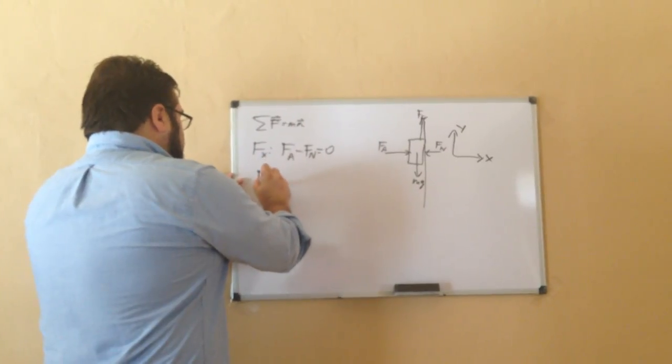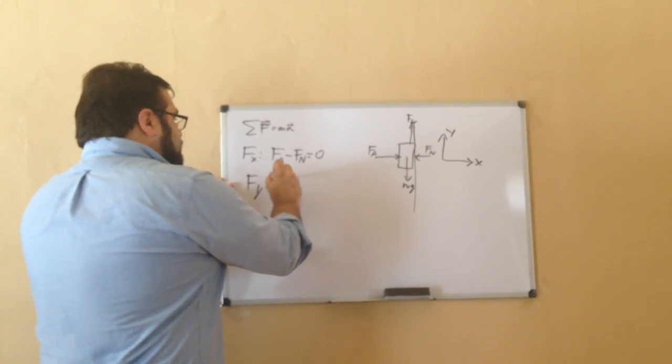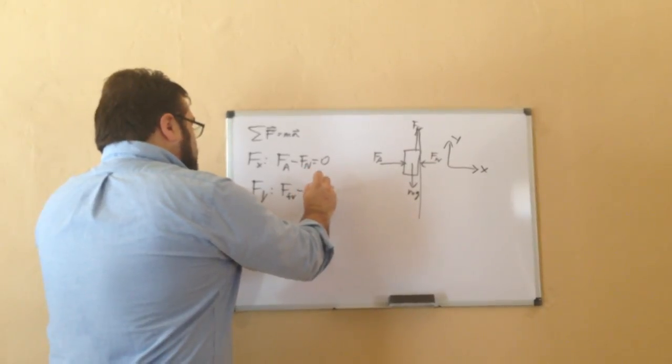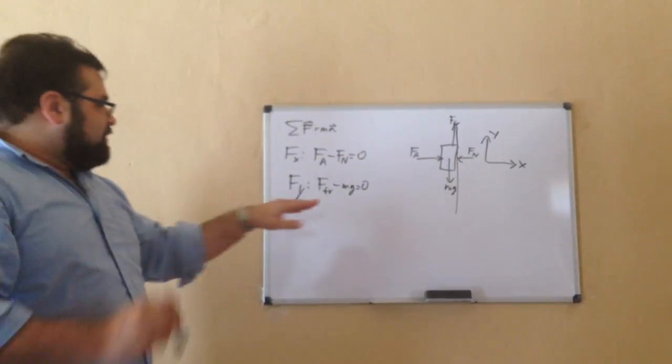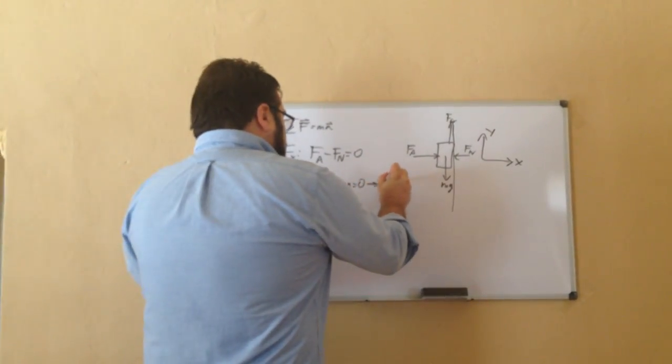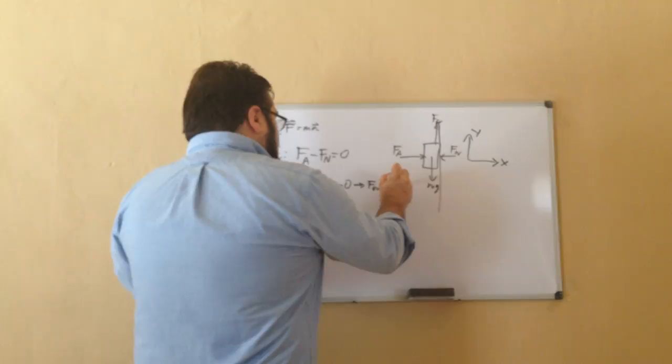In the y direction, you've got the friction force up and gravity down, and they balance out to give zero. So in this particular case, the friction force is equal to mg.